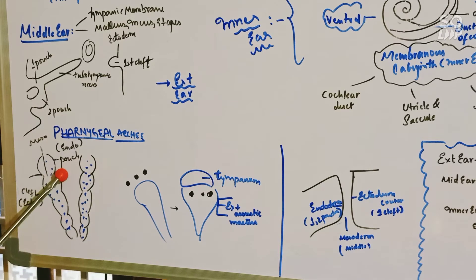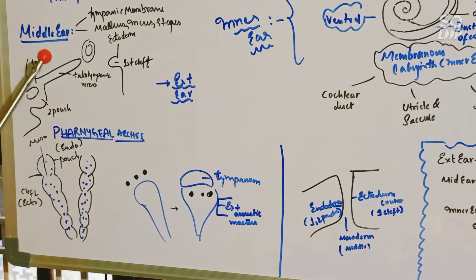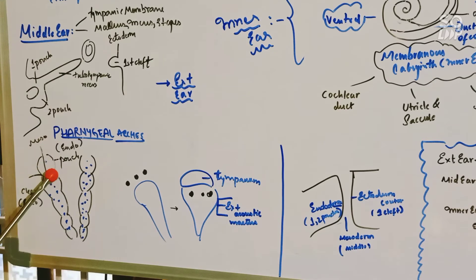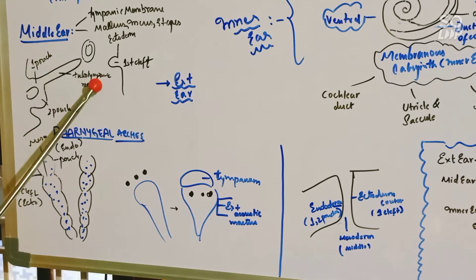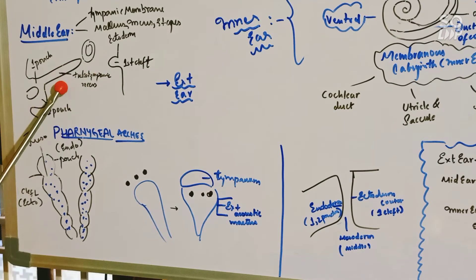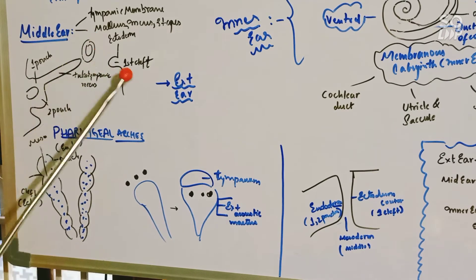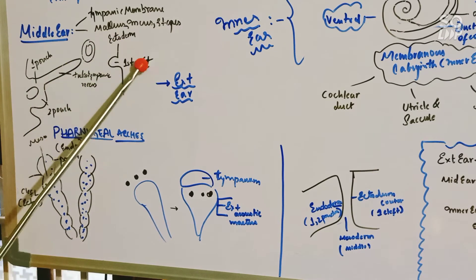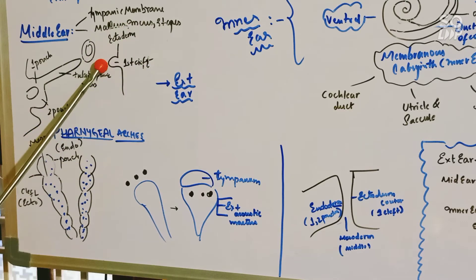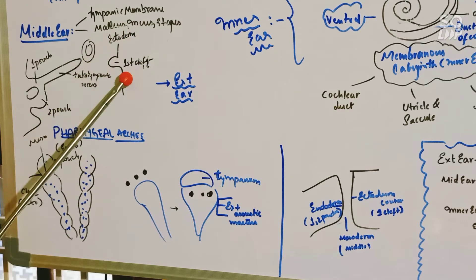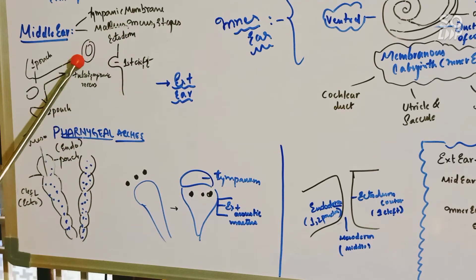From this, we are going to know how the middle ear is formed. From the first and second pouch, the tubo-tympanic recess forms, which forms the middle ear. And here you can see the first cleft, which is of the external ear. These both fuse together.